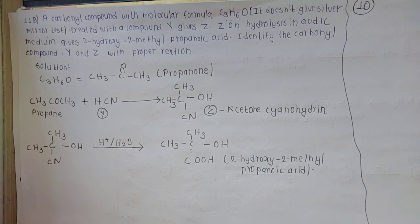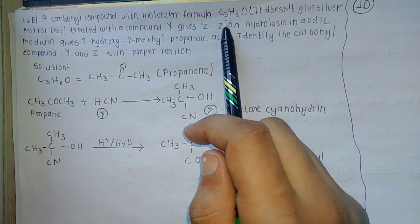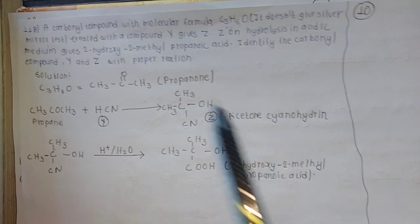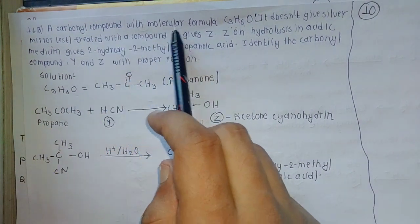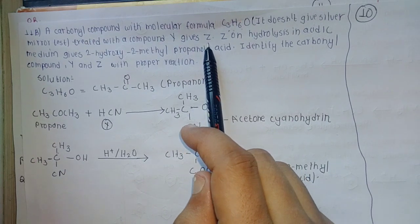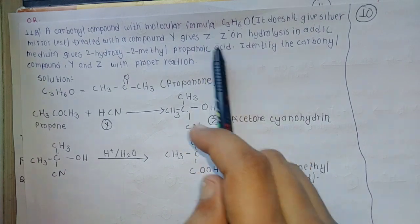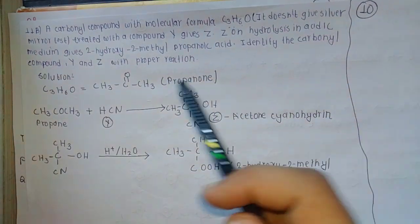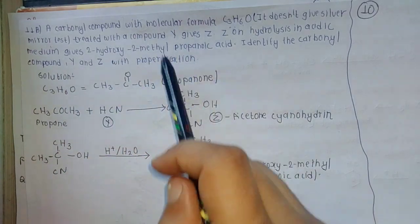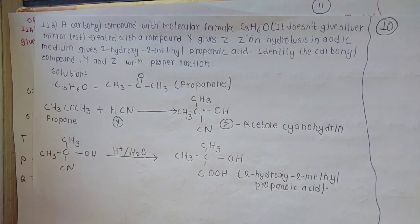This compound is made to get a ketone. When treated with compound Y, Y is treated by Z. Then Z gives 2-hydroxy-2-methyl-propanoic acid upon hydrolysis. That is the question we need to solve.